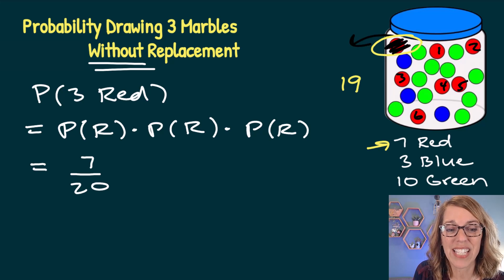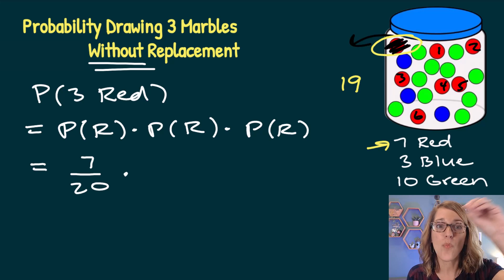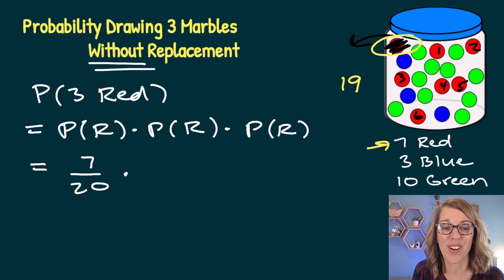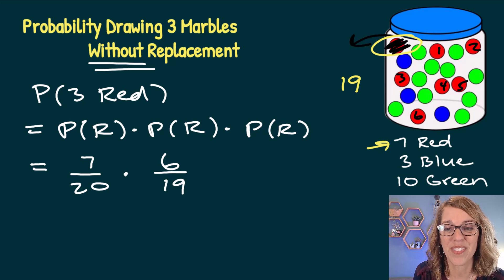So when I go to do the second probability, I've taken one red marble out. So there are six red marbles out of the 19.